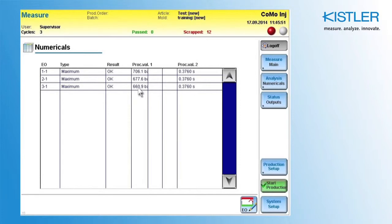You can also see the process values. In this example, because it is a maximum evaluation element, the process values are the maximum pressure values of the curve, and the times at which the maximum values occur.